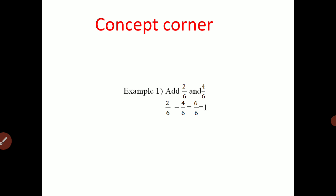Some examples are shown in front of you. The first example: add 2 upon 6 and 4 upon 6. That is 2 upon 6 plus 4 upon 6, which is equal to 6 upon 6, which equals 1. Here, 2 upon 6 is one rational number and 4 upon 6 is another. In 2 upon 6, 2 is the numerator and 6 is the denominator. In 4 upon 6, 4 is the numerator and 6 is the denominator.